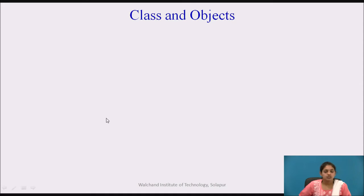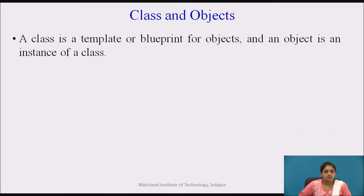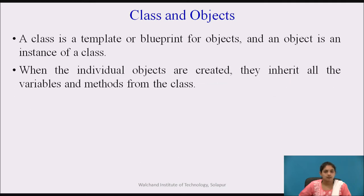Let us start with an introduction to class and objects. What is a class? A class is a template or blueprint for objects, and an object is an instance of a class. Just as you have the blueprint of your flat, similarly a class is nothing but a template or blueprint of what objects it has. When individual objects are created, they inherit all the variables and methods from the class.